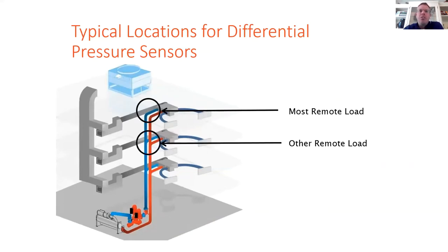A second option that is sometimes used is mounting the sensor two-thirds of the way down the piping system, and the minimum head set point is now going to be the remaining one-third of the piping, along with the remote loads, control valve, strainer, coil, balancing valve, et cetera. This minimum differential pressure set point is going to be a little bit higher, but it's going to still allow decent energy savings.